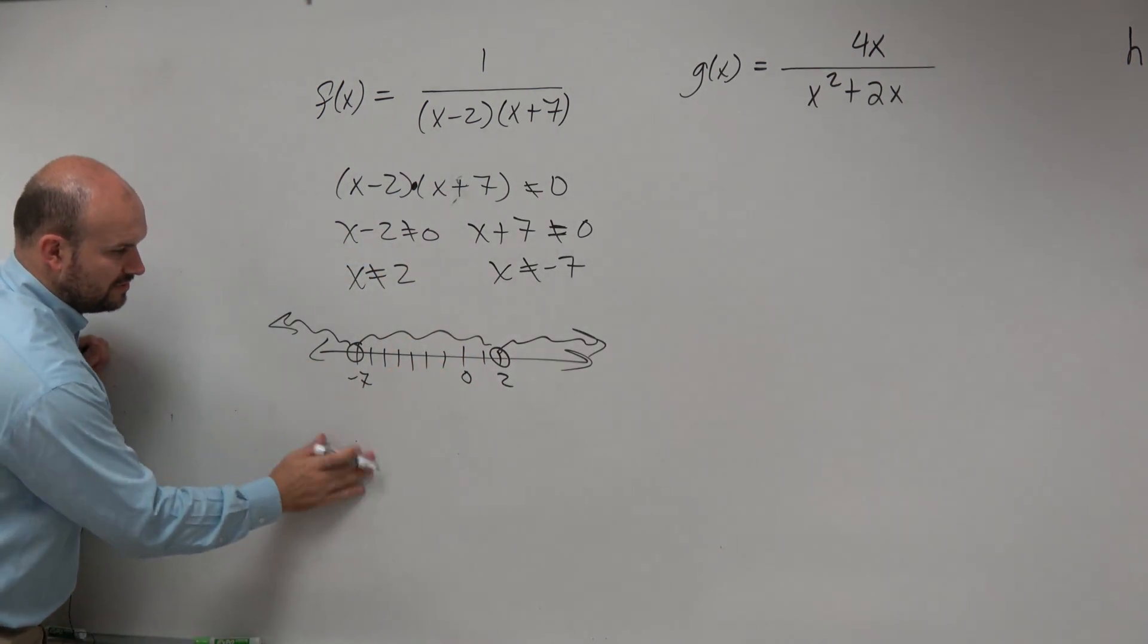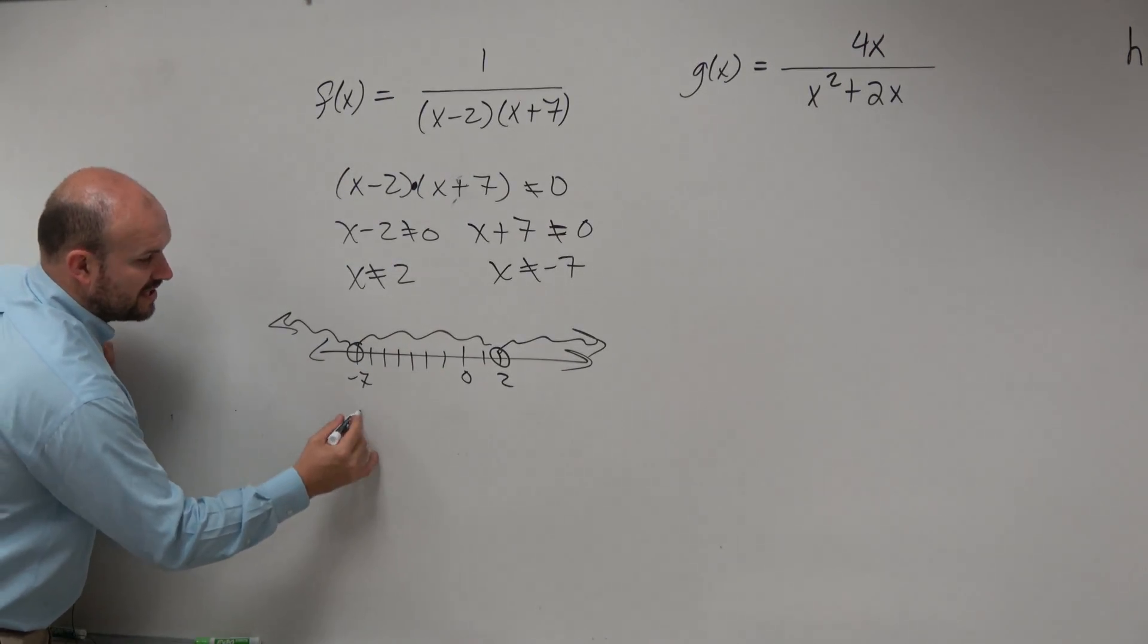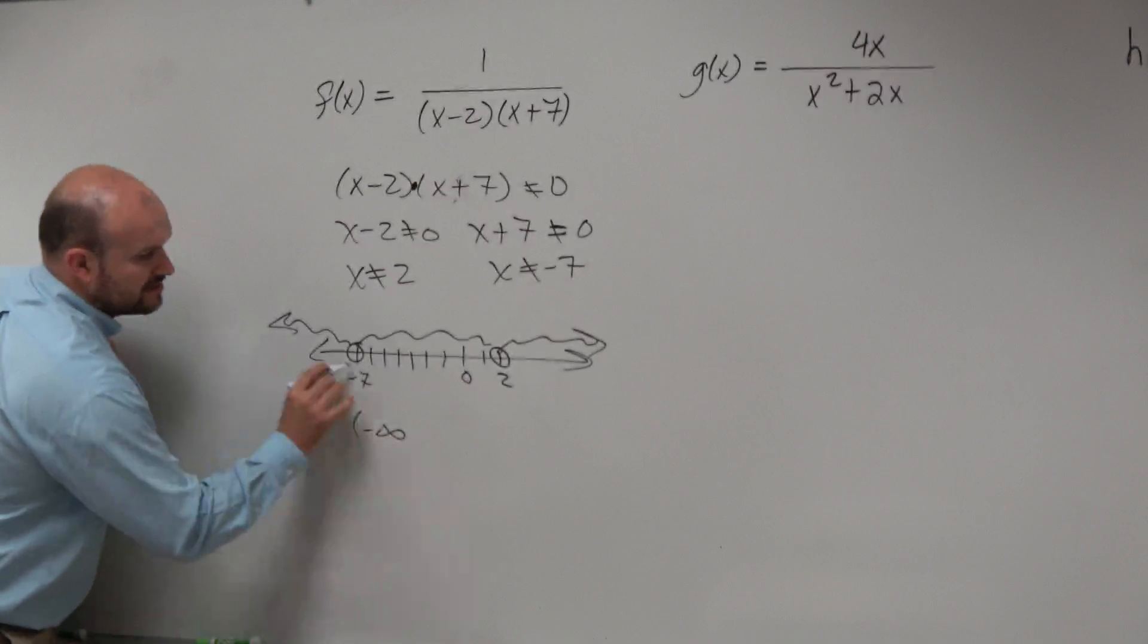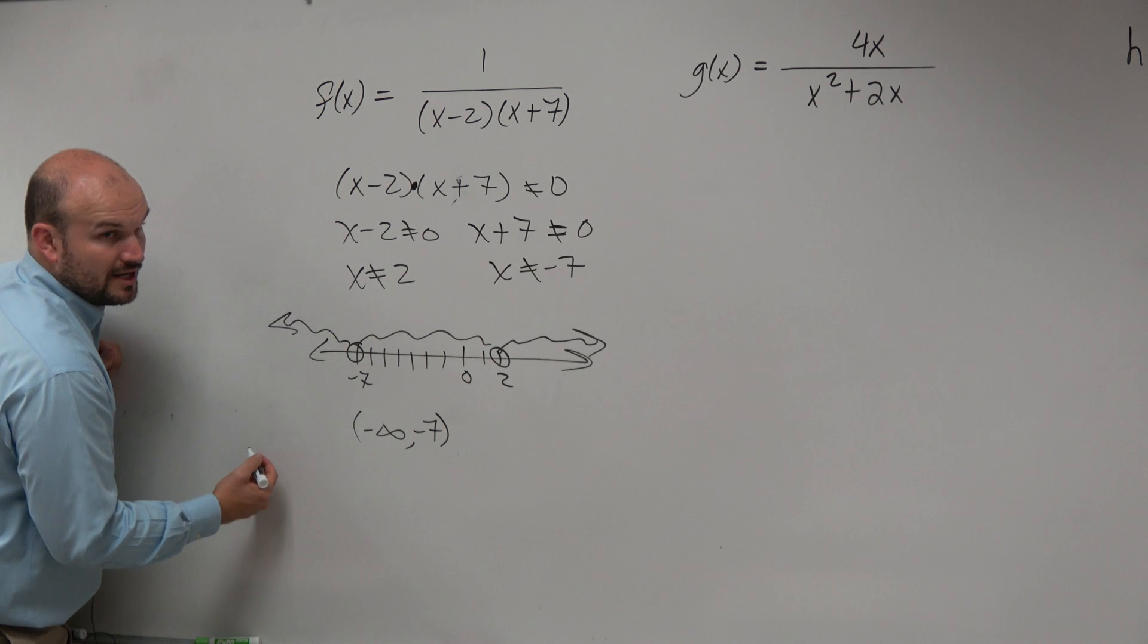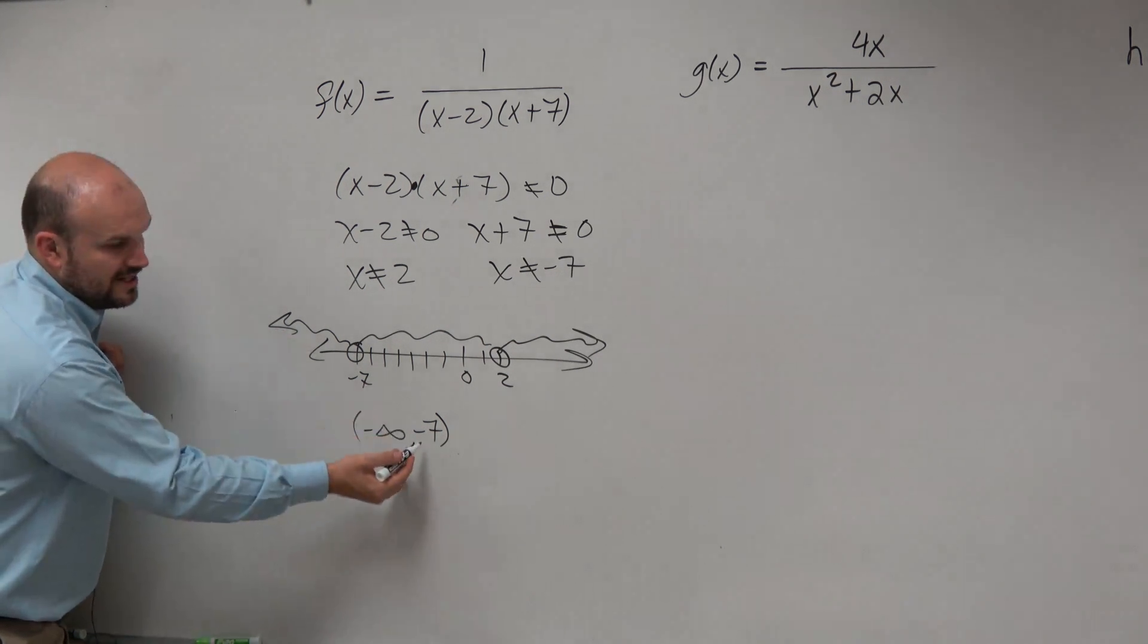So for the first interval, we have the smallest value is negative infinity to negative 7. Both of those are undefined, though, right? Infinity is always undefined, and negative 7 is undefined.